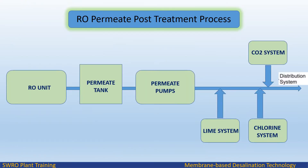Post-treatment is necessary to achieve desired product quality. Permeate water from RO units is stored in a permeate tank and distributed with the help of permeate pumps to the distribution network. The following dosing is performed: lime system, chlorination system, and carbon dioxide. Product water quality is maintained within limits after the post-treatment process.